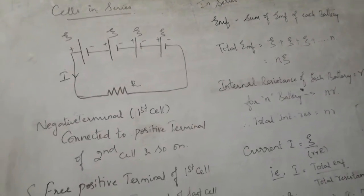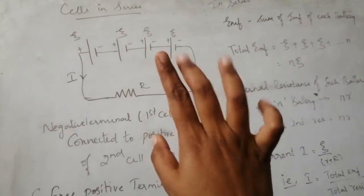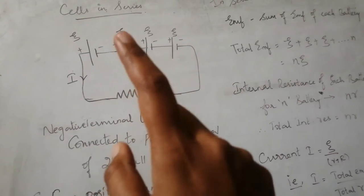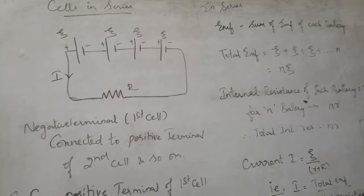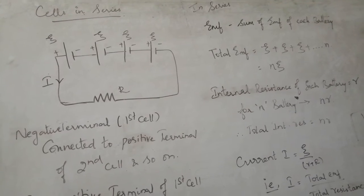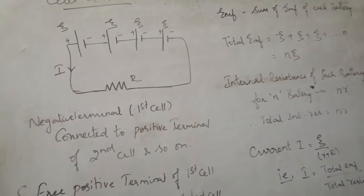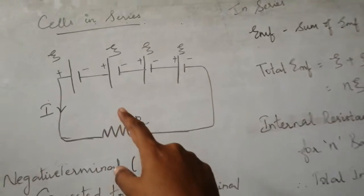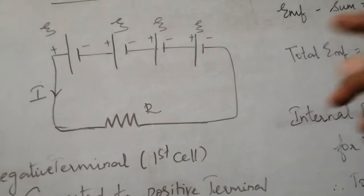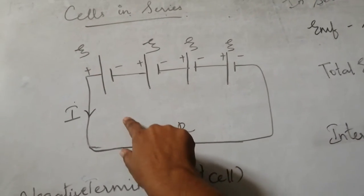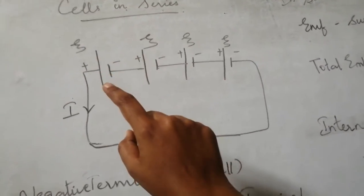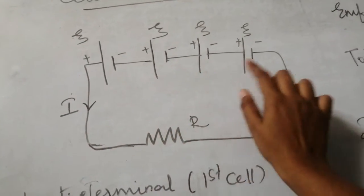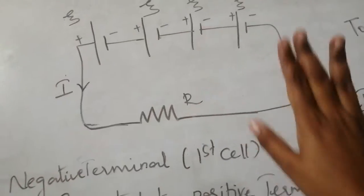Hello students, the next topic is cells in series. In a series connection, more than one cell is connected in series. This is similar to resistors connected in series — the total EMF equals the sum of EMF at each resistor. Similarly, for batteries the total EMF in the circuit equals the sum of the EMF of each battery, and the current is the same throughout.